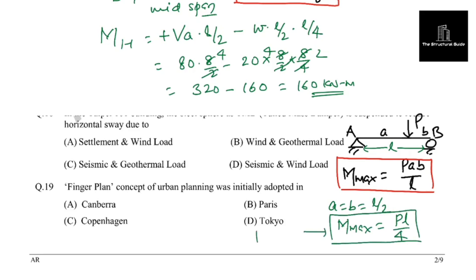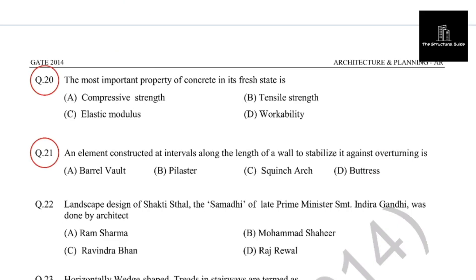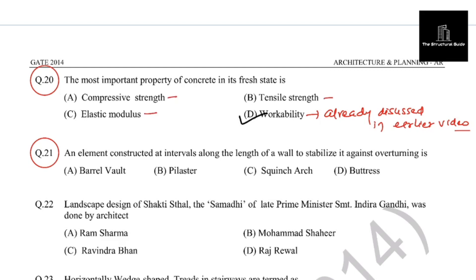Moving to the next question: the most important property of concrete in its fresh state. The correct answer is workability. I have already discussed workability in an earlier video — click the I button to learn more. Compressive strength, tensile strength, and elastic modulus are properties of hardened concrete; compressive strength is generally determined after 28 days.